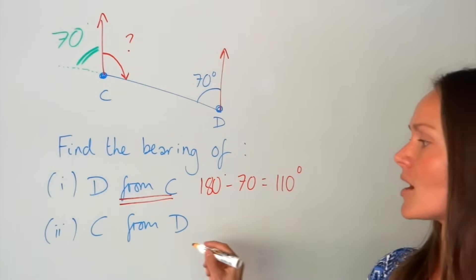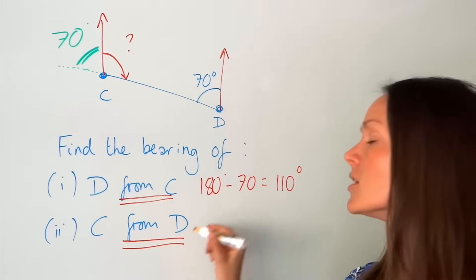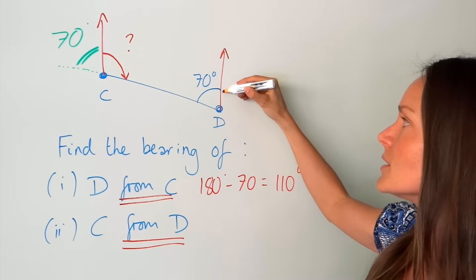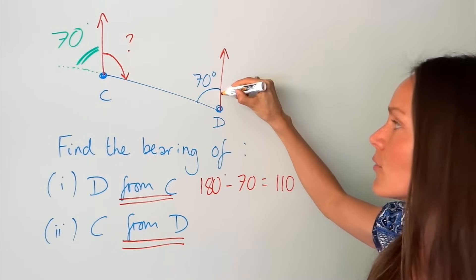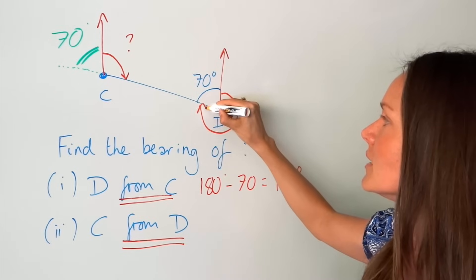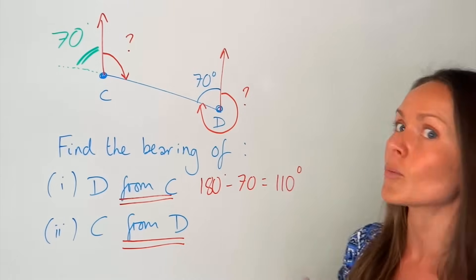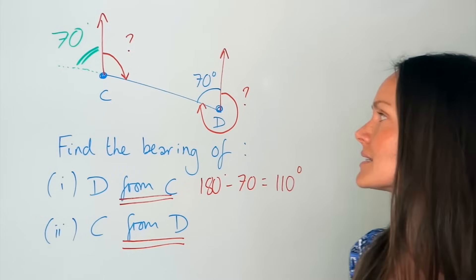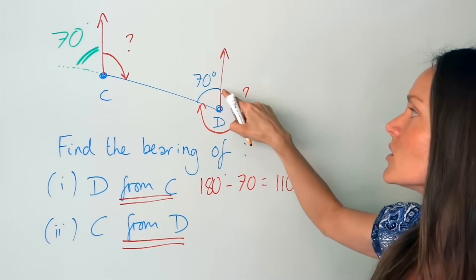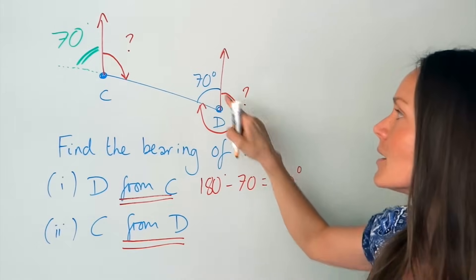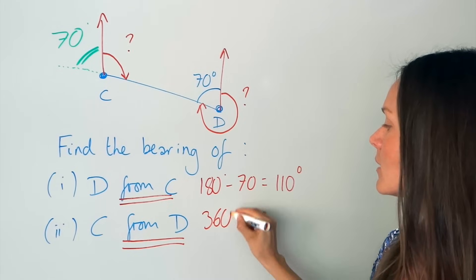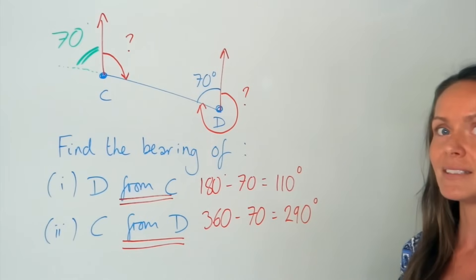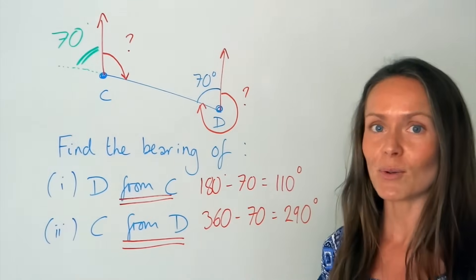For part two, find the bearing of C from D. Start at the north arrow of D and draw clockwise around point D until you hit the line travelling to C. Angles in a full circle add up to 360 degrees, and we know one part is 70 degrees, so the bearing is 360 minus 70, which gives 290 degrees.